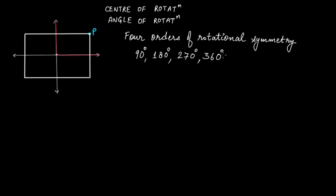Every figure has at least one order of rotational symmetry at 360 degrees, because any figure rotated a full 360 degrees returns to its initial position. But we are not interested in that trivial case. For a square, apart from 360 degrees, we also have rotational symmetry at 90 degrees, 180 degrees, and 270 degrees — giving us four orders of rotational symmetry in total.